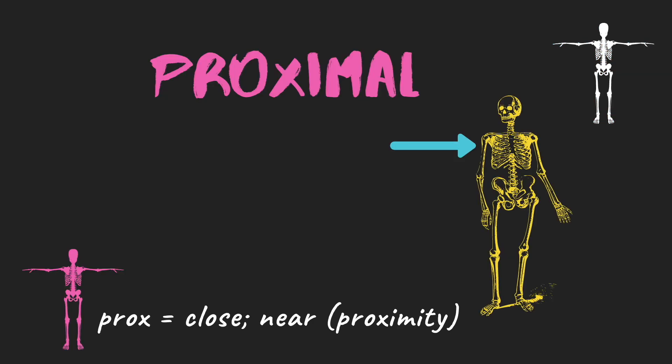Next we have proximal. 'Prox' means close or near, just like proximity. In anatomical terminology, if you're asked to describe a proximal bone in relation to a joint, it's the complete opposite of distal. Proximal is the one closest to the joint. The humerus is more proximal to the shoulder than the radius. The most proximal bone to the hip is the femur — the closest in proximity to where the joint itself is.